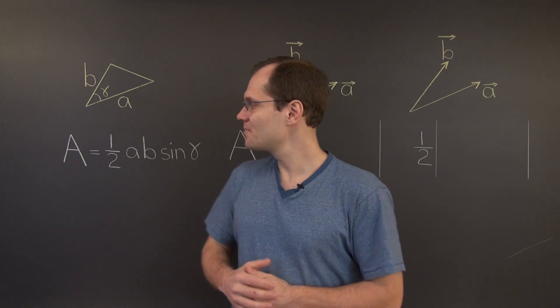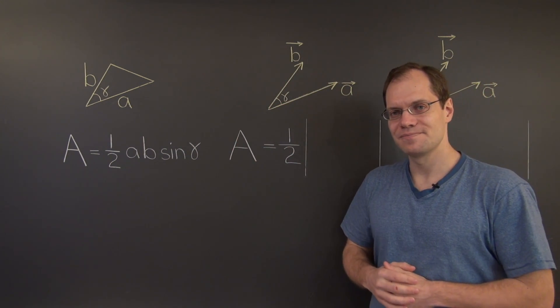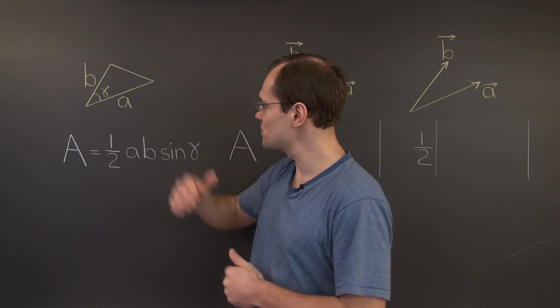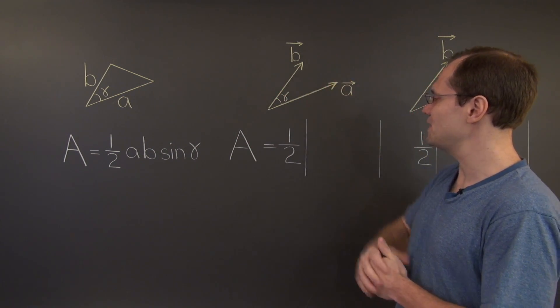But first, we must convert this problem in geometry into one in linear algebra. So instead of having a triangle with two sides A and B, we now have two vectors, vector A and vector B.